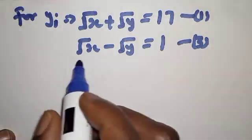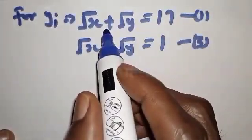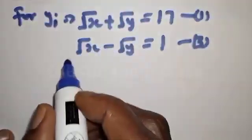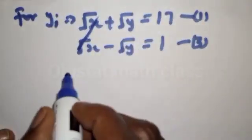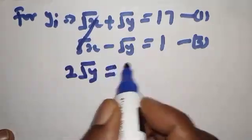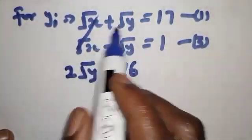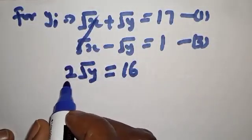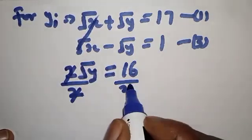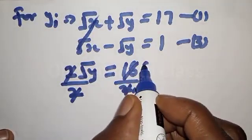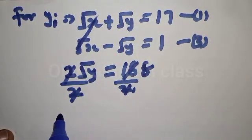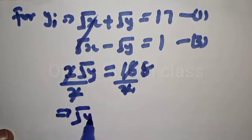Now for y, let's subtract equation 3 from equation 1. The square root of x terms cancel, giving us 2 times square root of y equals 17 minus 1, which equals 16. Dividing both sides by 2, we get square root of y equals 8.